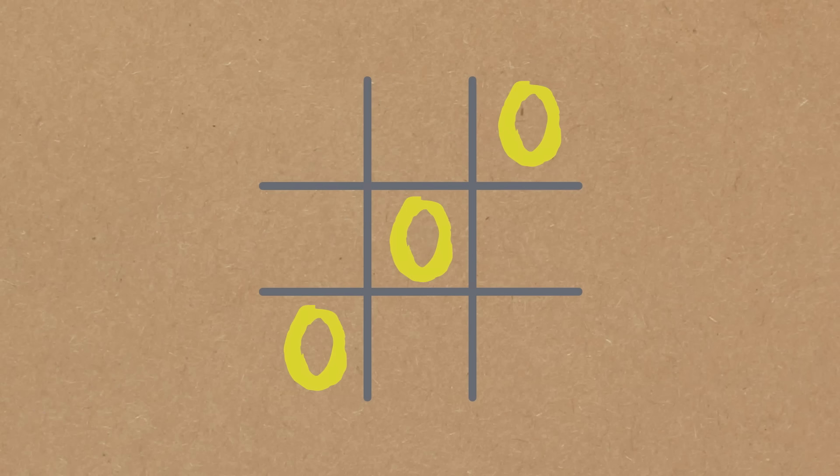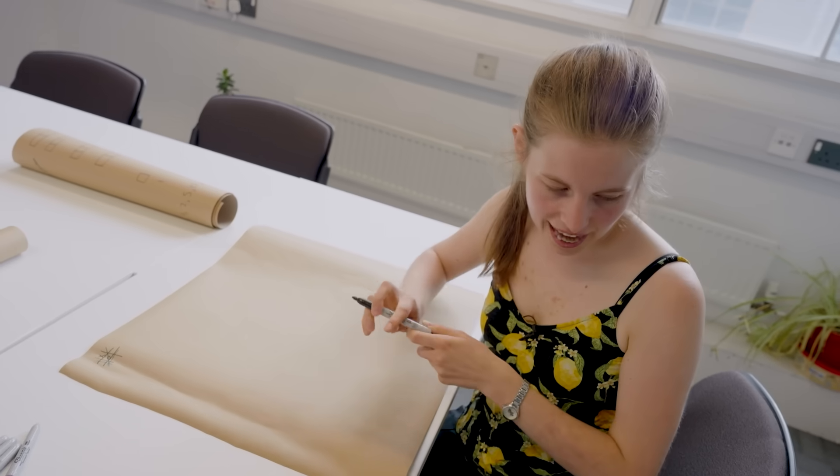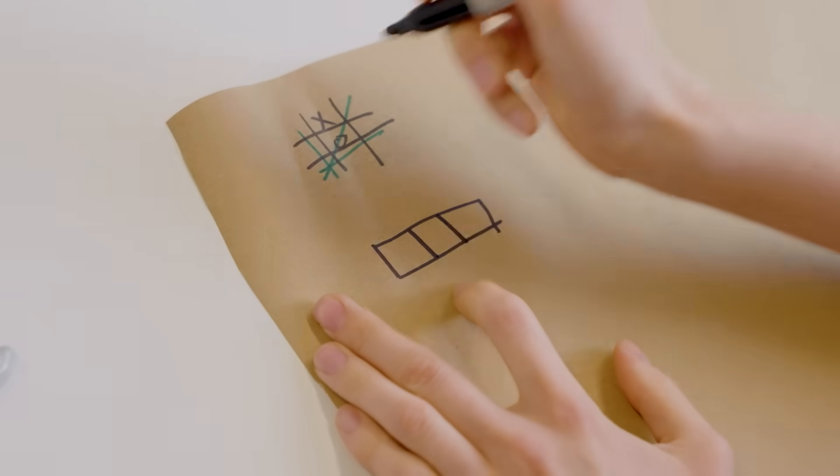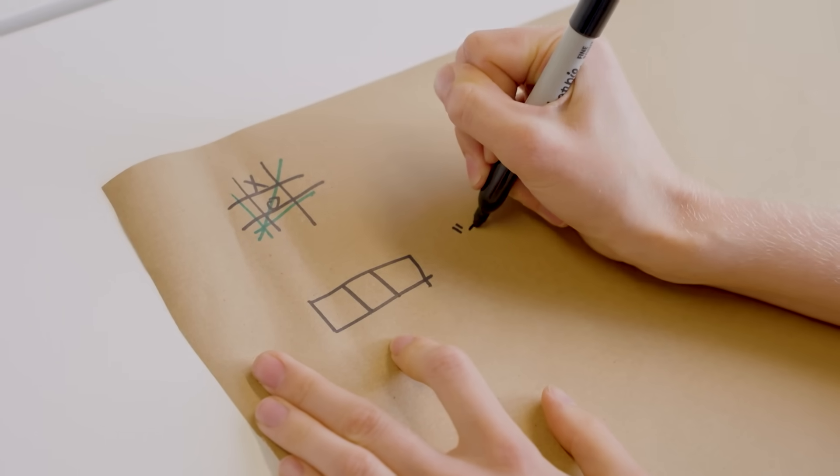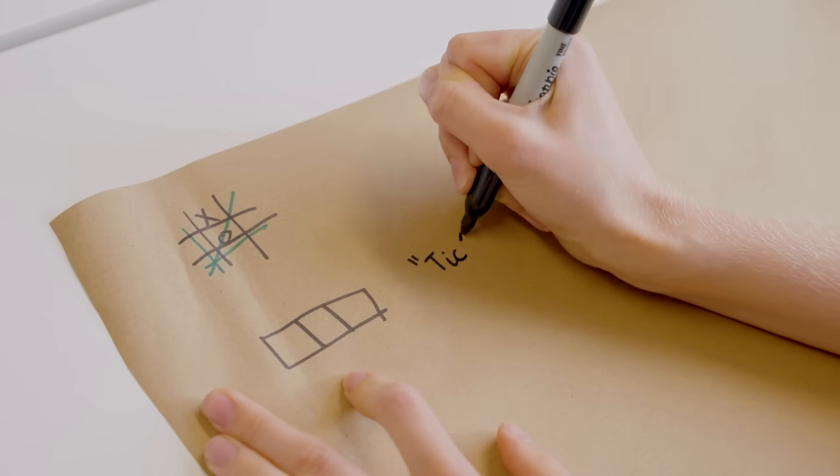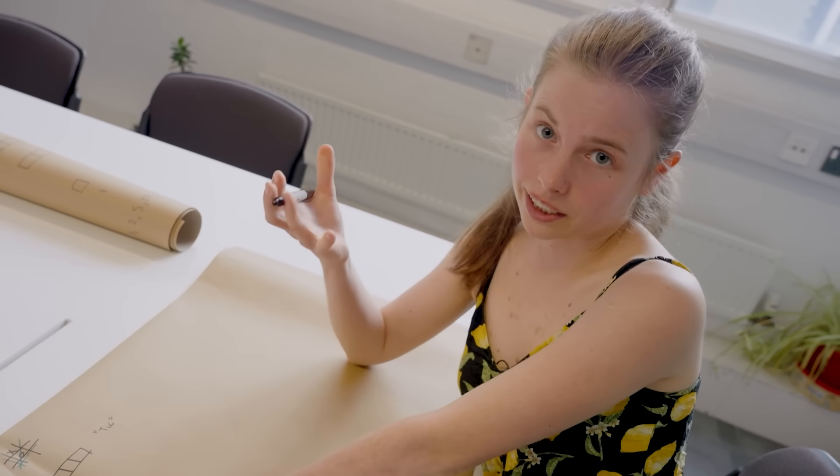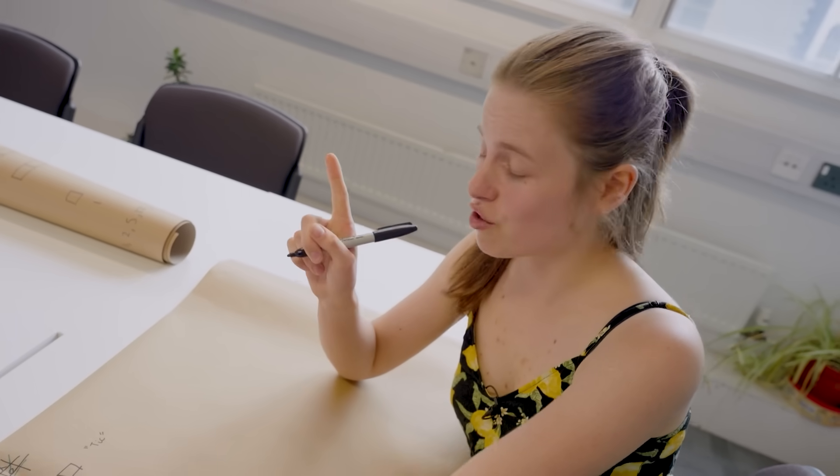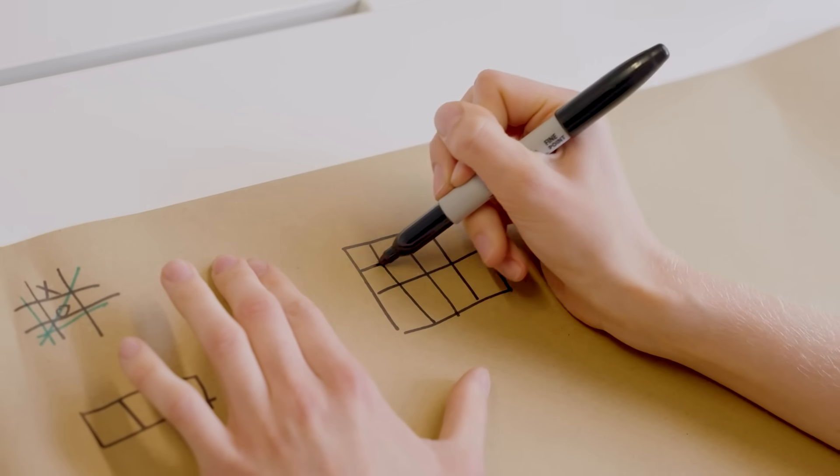But what if we're going to change the rules? I'm going to say you only win if you get this little fella. We're going to give him a name, we're going to call him Tic, in some orientation, which means you can't have diagonals. But I'm going to allow you to play on a bigger grid. So we're going to play on a 4x4 grid.